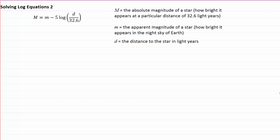In this equation, capital M equals lowercase m minus five times the logarithm of d over 32.6. The capital M is the absolute magnitude of a star, which is how bright it appears at a particular distance. In the previous video, I didn't mention that particular distance happened to be 32.6 light years.